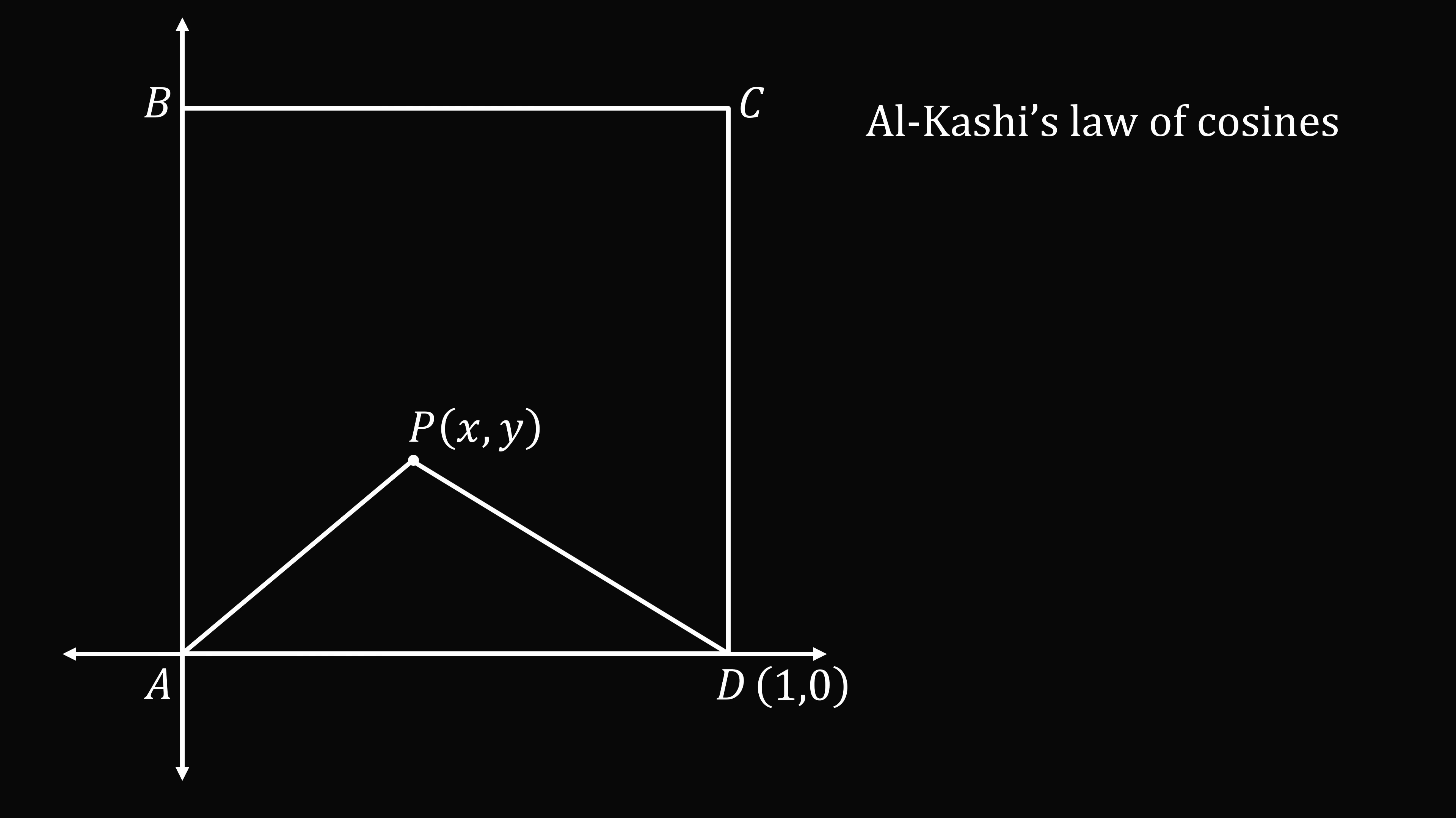By Al-Kashi's law of cosines, the square of the length of AD is equal to the square of the length of AP plus the square of the length of PD minus 2 times the length of AP times the length of PD times the cosine of the angle APD. We can rearrange this to solve for the cosine of the angle, and then we have the square of AP plus the square of PD minus the square of AD all over 2 times the length of AP times the length of PD.